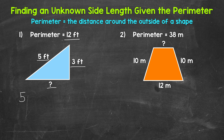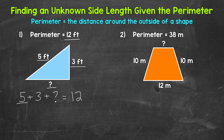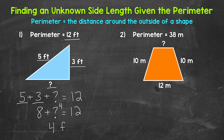So we can set this up as: five feet plus three feet plus what equals 12 feet. This is just like how we would normally find the perimeter — we're adding all of the side lengths, and the order we add them doesn't matter as long as they are all included. Five feet plus three feet gives us eight feet. So eight feet plus what equals 12 feet? Well, eight plus four equals 12, so our missing side length for number one is four feet.